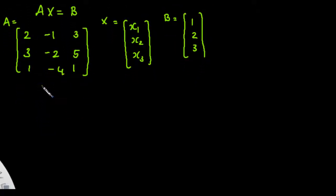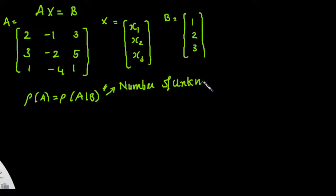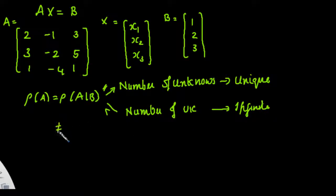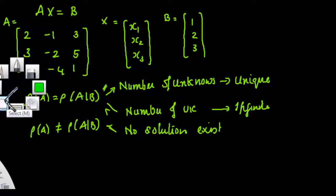We can check whether this system has unique solution, no solution, or multiple solutions by checking its rank condition. If rank of A equals rank of the augmented matrix A|B and this equals the number of unknowns, then it has a unique solution. If it is less than the number of unknowns, then it will have infinite number of solutions. If rank of A does not equal rank of the augmented matrix A|B, then no solution exists.